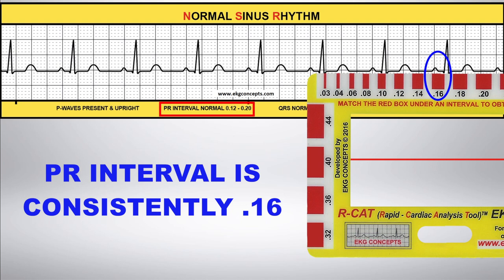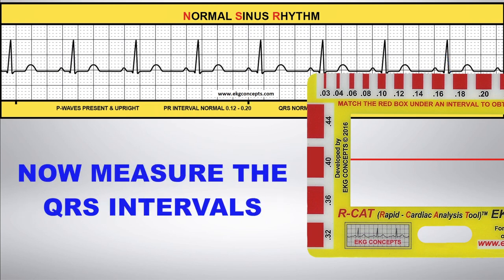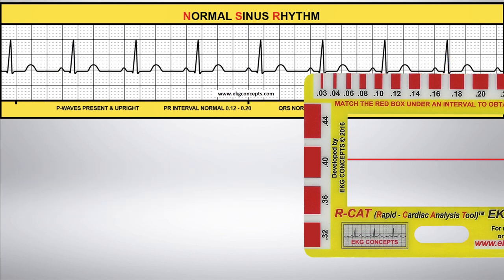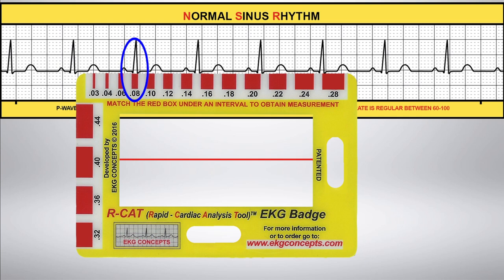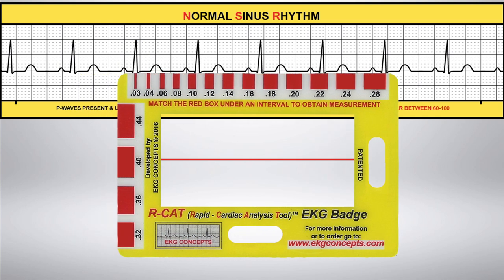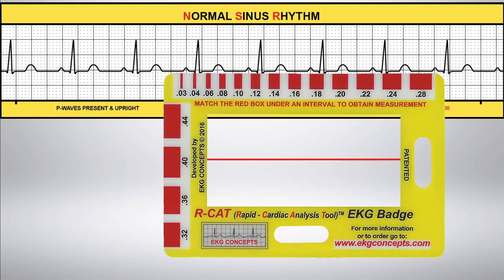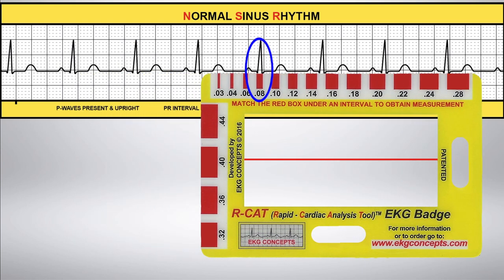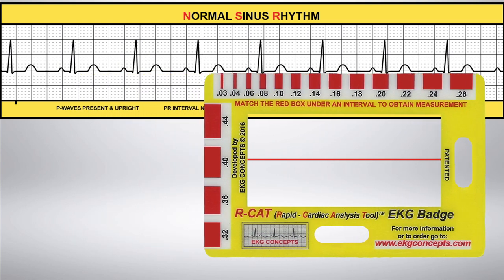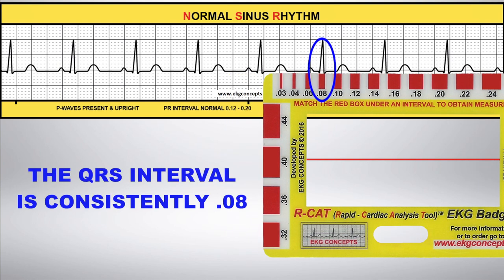Now use the calibrated red boxes to measure the QRS intervals. The QRS interval is consistently 0.08 and within the normal range of less than 0.12.